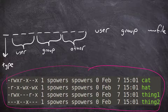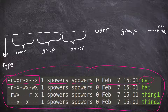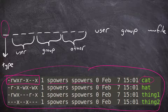The part we want to pay attention to is the permission string section. The rest should make sense: this is the owner, this is the group assigned to the file, this is the date and time, and this is the file name. The permission string is separated into sections. The very first field is the type — it's either a dash for a regular file or a 'D' for directory.